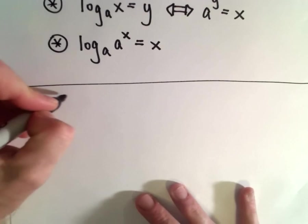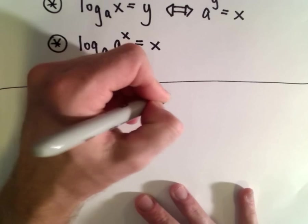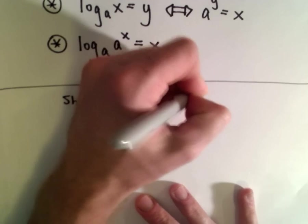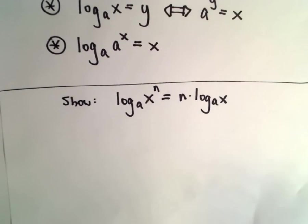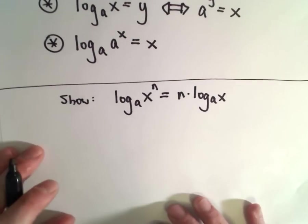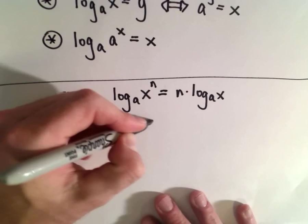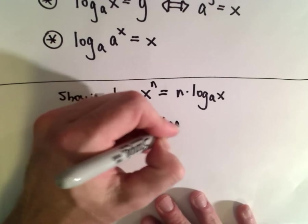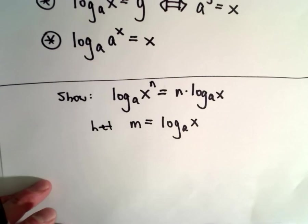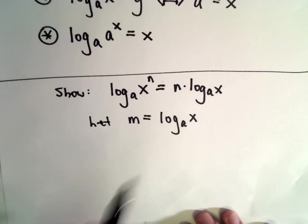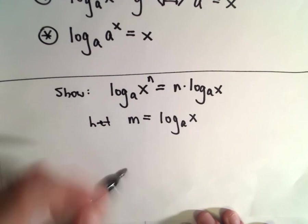Let's start by showing that log base a of x raised to the power of n equals n times log base a of x. The first step is just a relabeling: let m equal log base a of x — not x to the n yet, just x. So m equals log base a of x, and we rewrite this as a to the power of m equals x, switching into exponential notation.